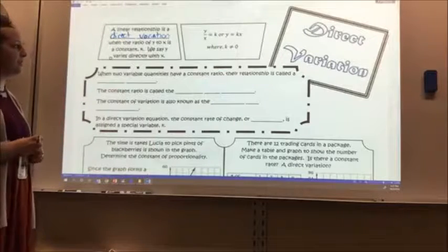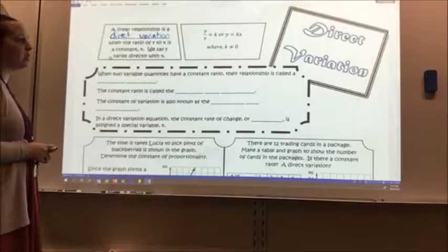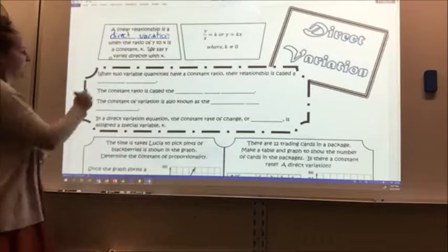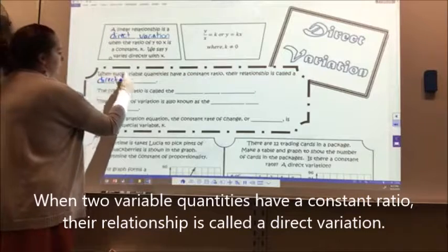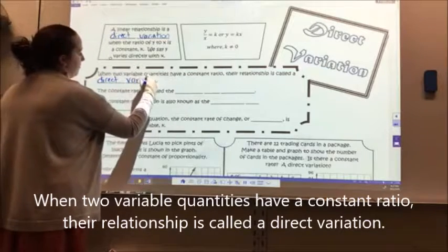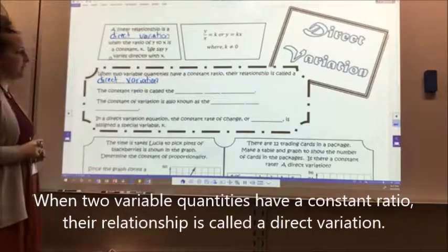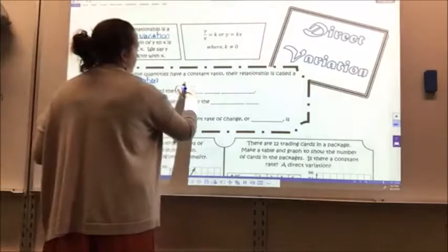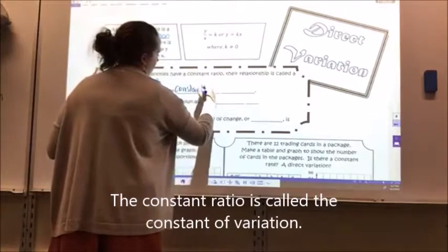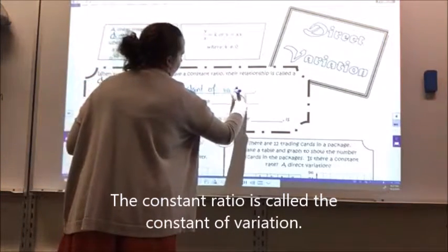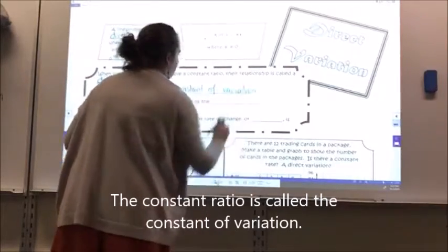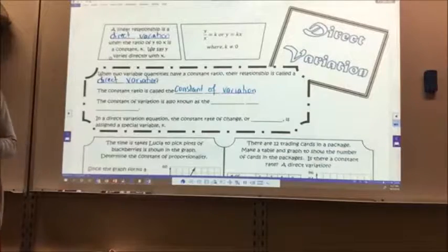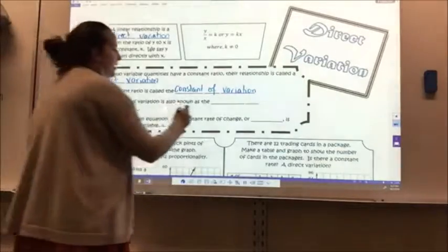When two variable quantities have a constant ratio, their relationship is called a direct variation. The constant ratio is called the constant of variation, also known as the constant of proportionality.